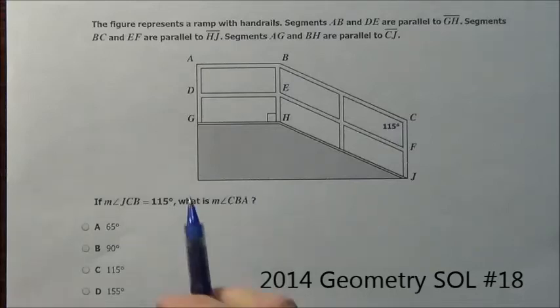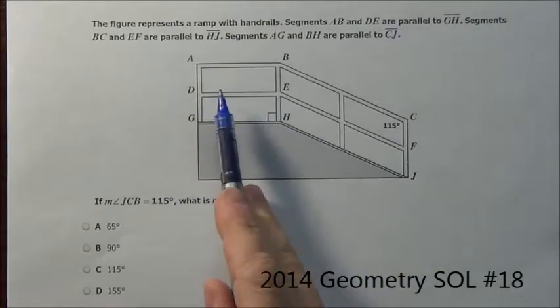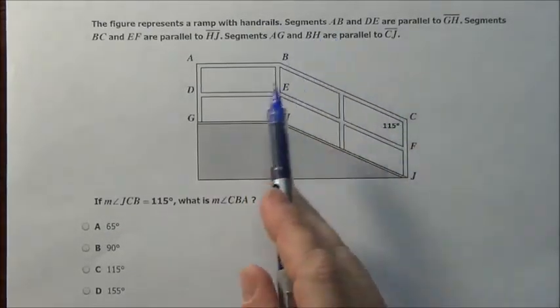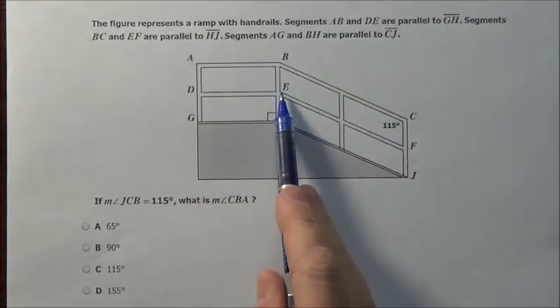Here's problem 18. The figure represents a ramp with handrails. Segments AB and DE are parallel.